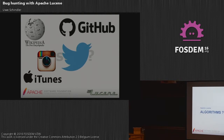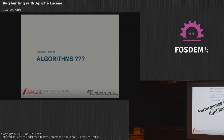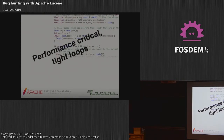What makes Lucene interesting for testing JVM bugs? First, the algorithms: Lucene has huge indexes with billions of terms, gigabytes in size, and a lot of very performance-critical tight loops. These loops are executed millions of times for each search query, so it's really very low-level Java code — not something like an EJB application just calling interfaces.